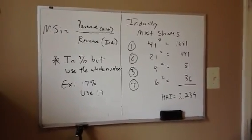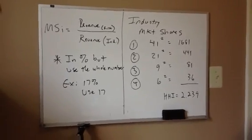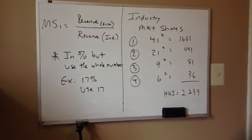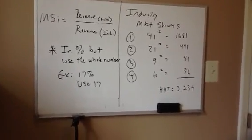Again, if we need to figure out our market shares, we're going to do revenue of the firm over revenue of the industry. That will give us a decimal. We would usually convert that decimal into a percentage, such as the company owns 8% of the market.